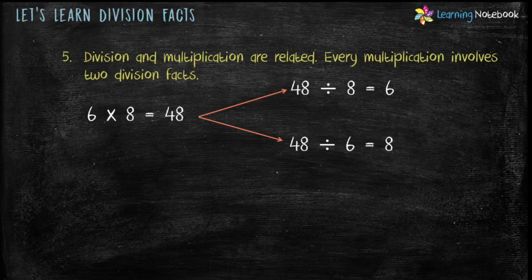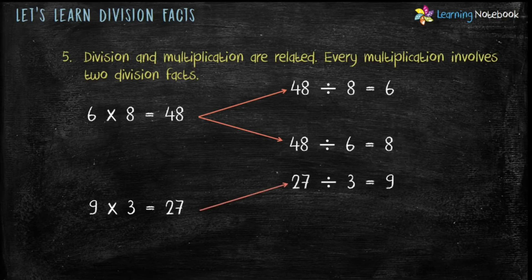Students, let's take one more example. 9 into 3 equals 27. First division fact is 27 divided by 3 equals 9, and second division fact is 27 divided by 9 equals 3. So students, division and multiplication are related. Every multiplication involves 2 division facts.